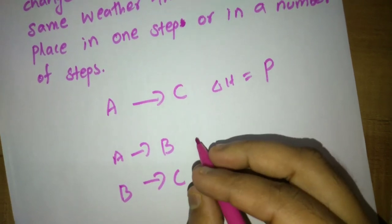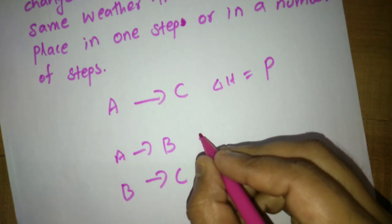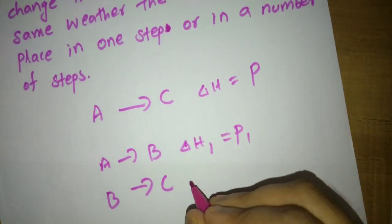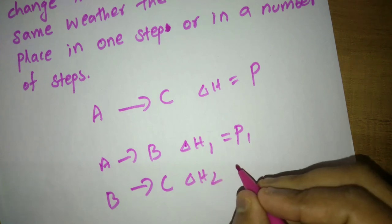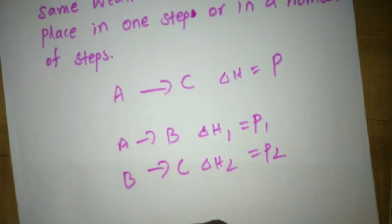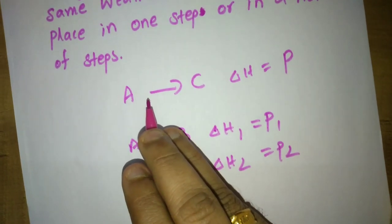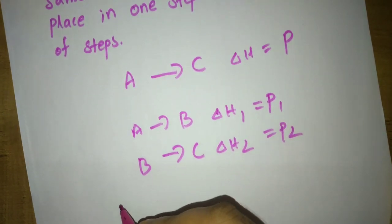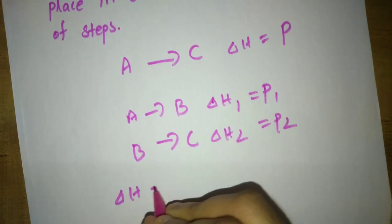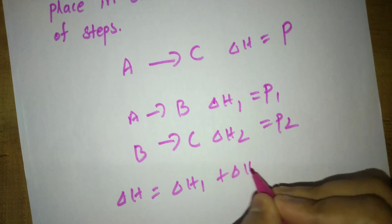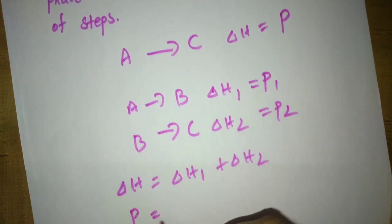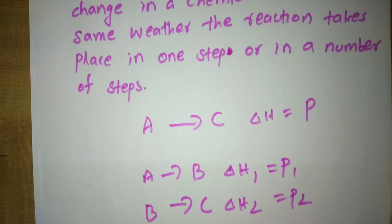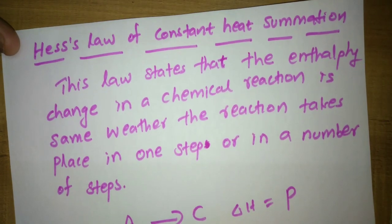The same reaction now takes place in two steps. The delta H value of the first step, delta H1, is equal to p1, and delta H2 is equal to p2. As per Hess's Law, whether the reaction takes place in a single step or in several steps, the enthalpy change is the same. So delta H equals delta H1 plus delta H2, that is, p equals p1 plus p2. This is Hess's Law of Constant Heat Summation.